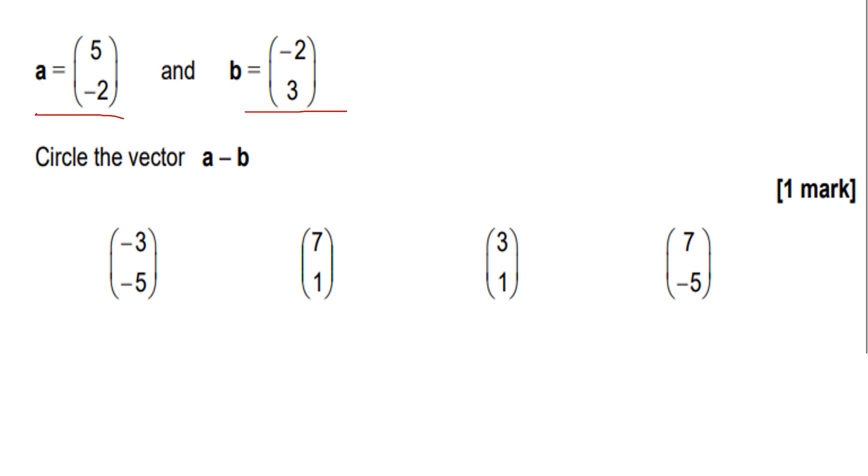Column vectors - five, minus two and minus two, three. It tells me the direction, so it's your x component and your y component. This just tells me like a translation of a point or a shape.